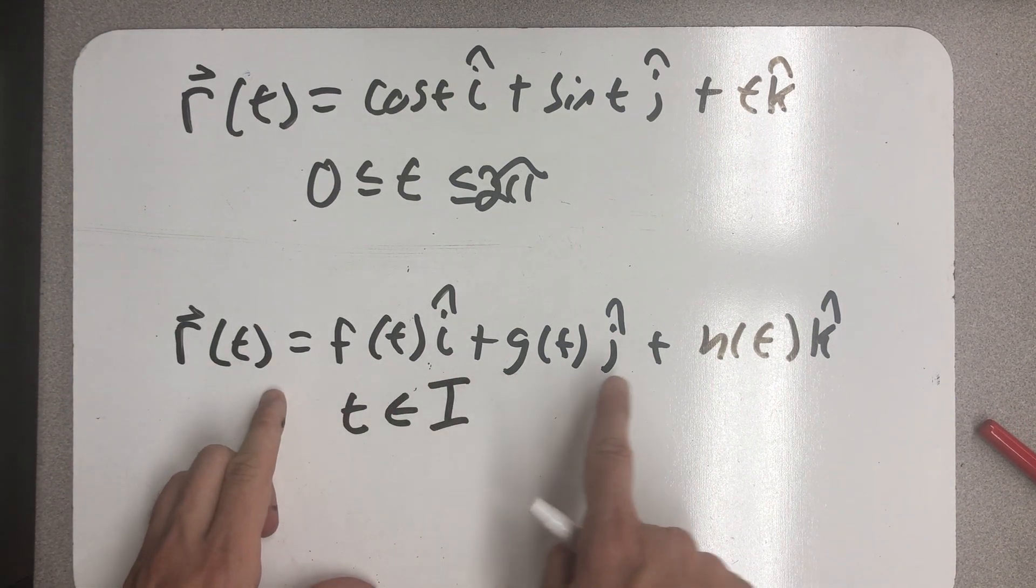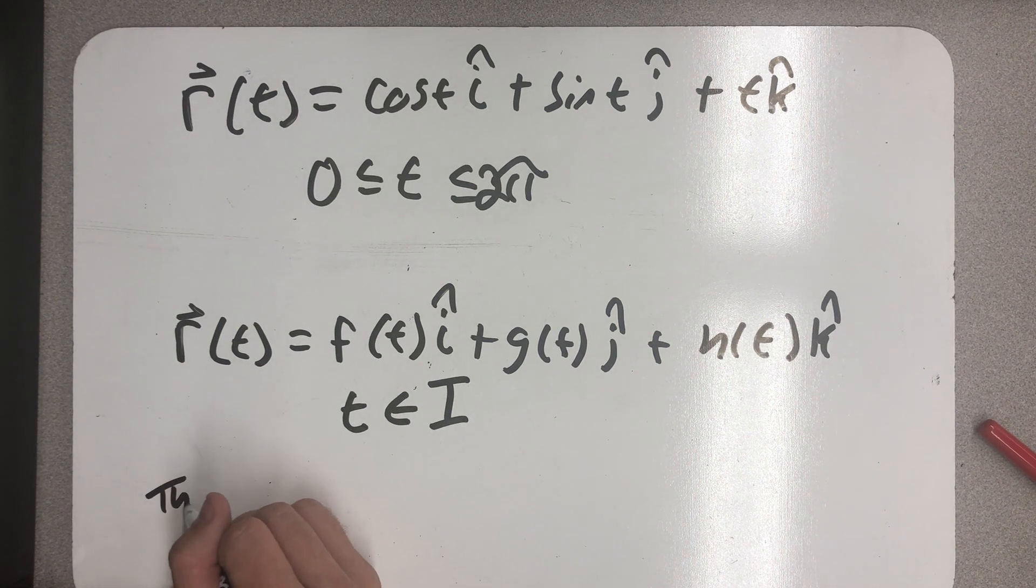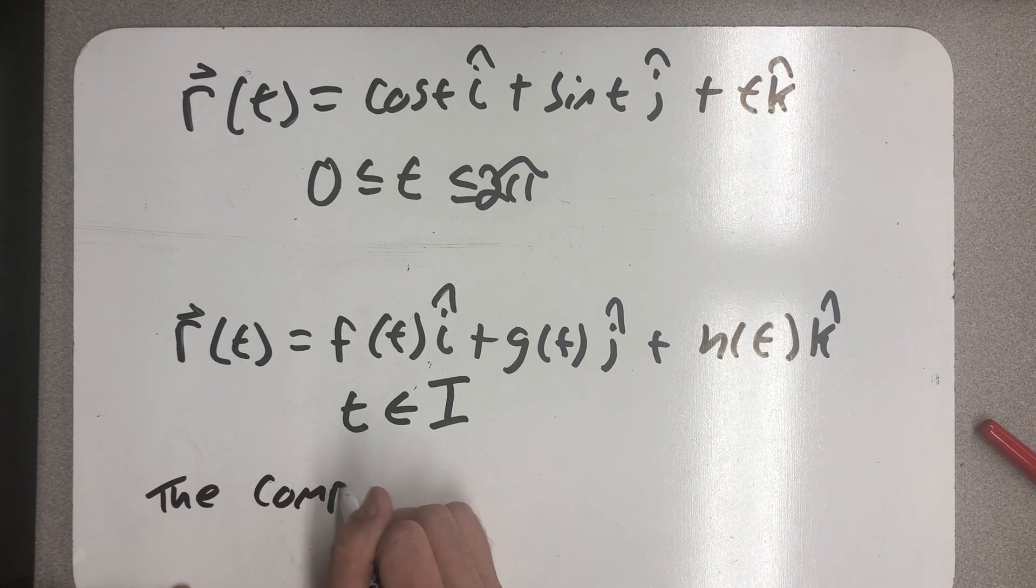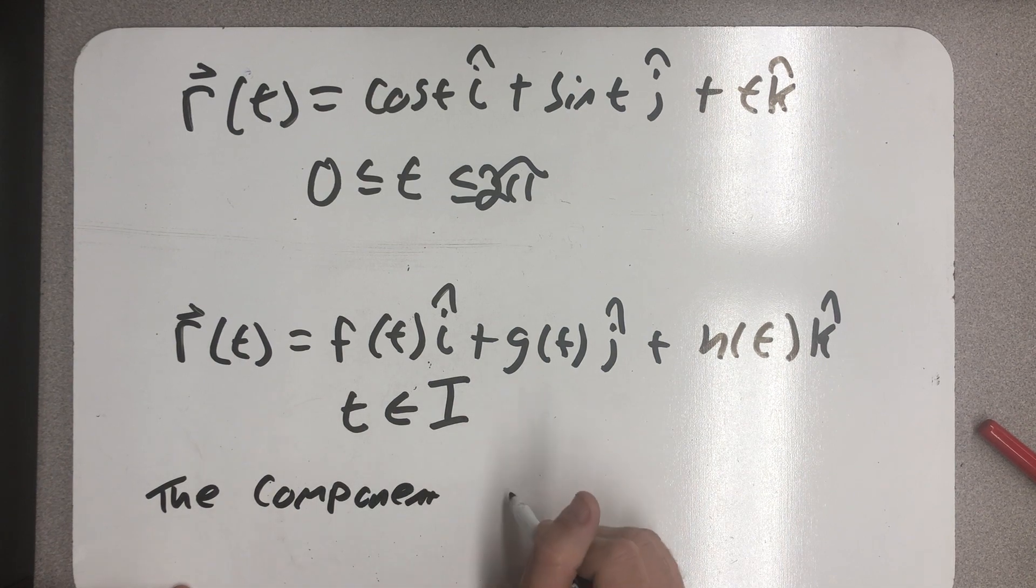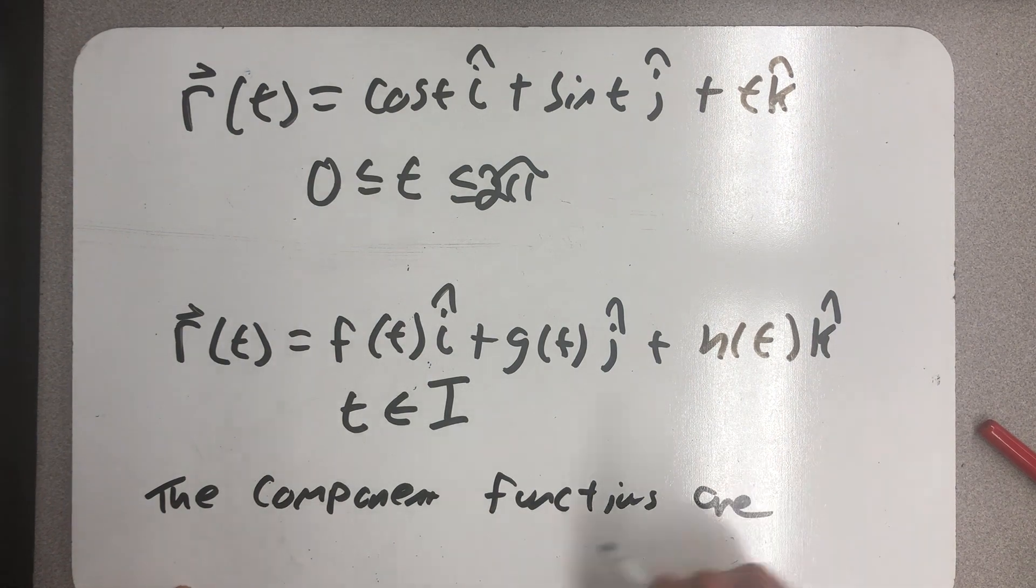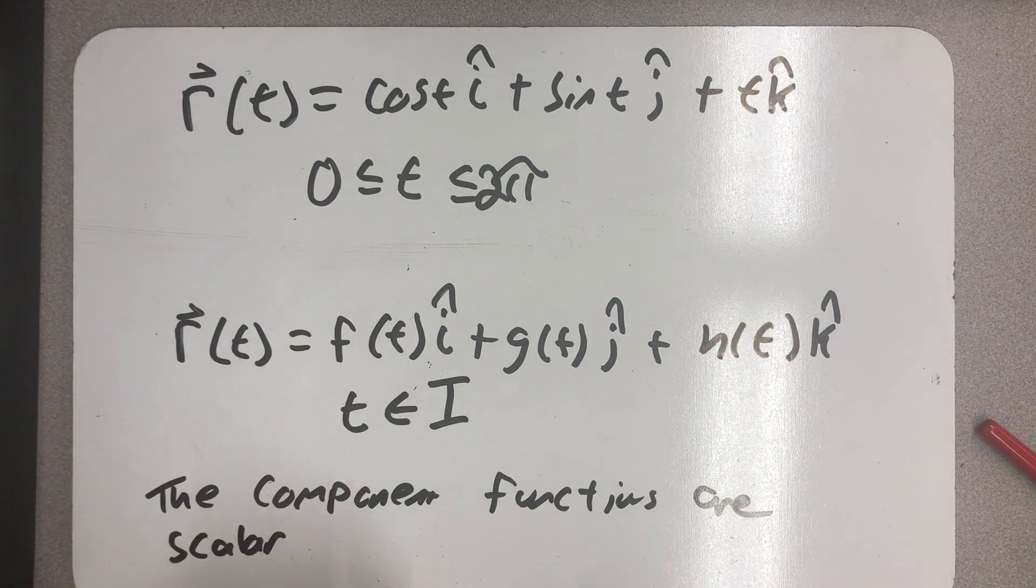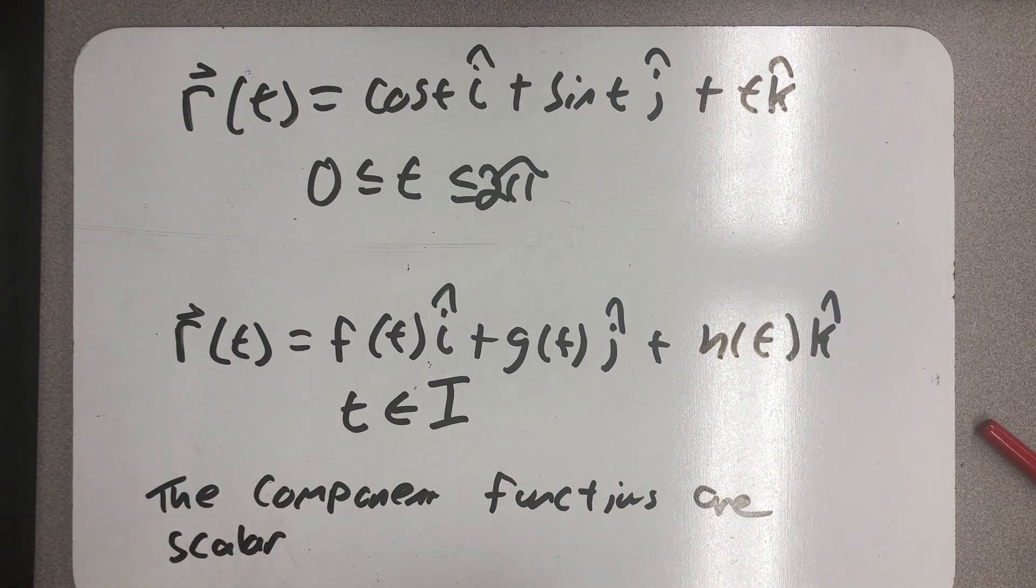The functions on the inside, the component functions, are what we call scalar functions. These are the functions we're used to, right? You plug in a value for t, and you get an f(t), a number, a scalar.